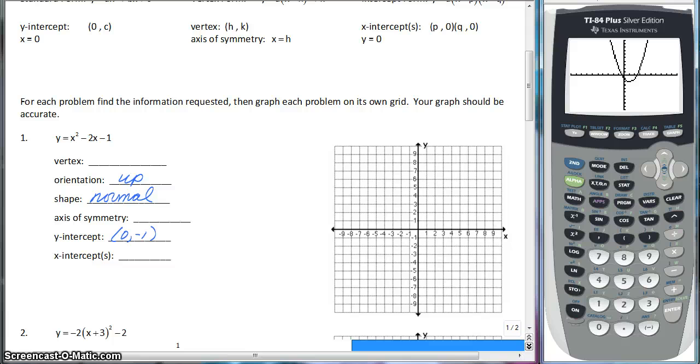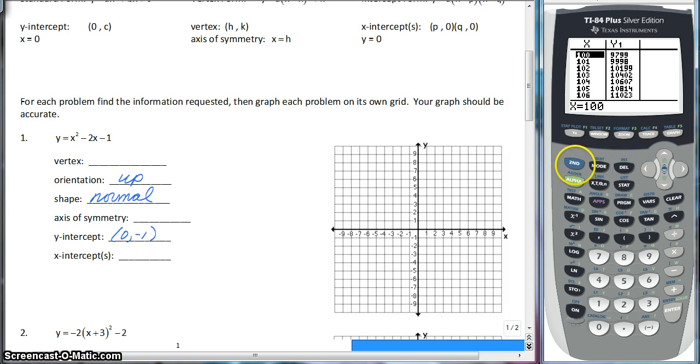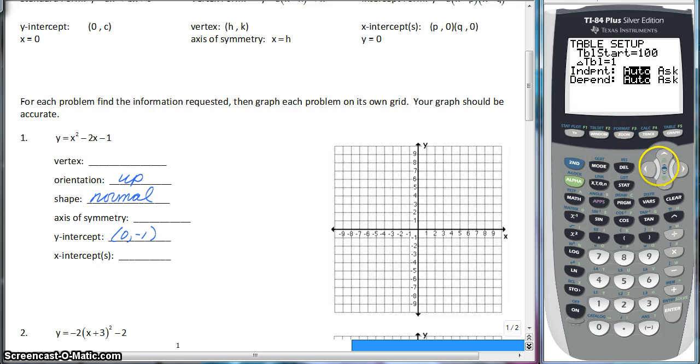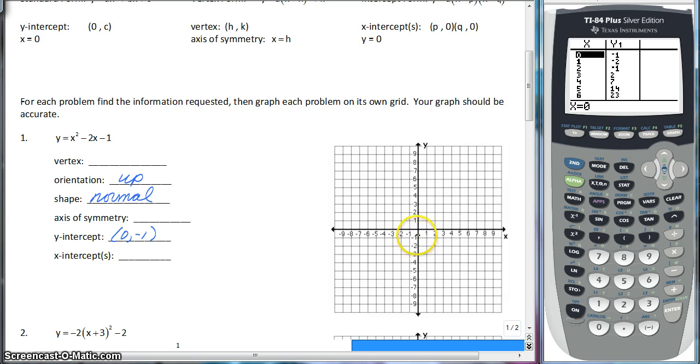So this is what our parabola looks like. Now, of course, it says your graph should be accurate. So you can just go right ahead and press second graph and get a few table values. We are going to go change my table set. I am going to go back and start at zero. And so at zero, you can see I am at negative one.